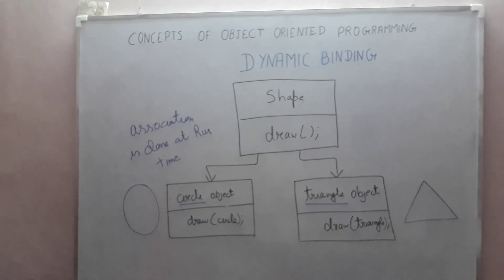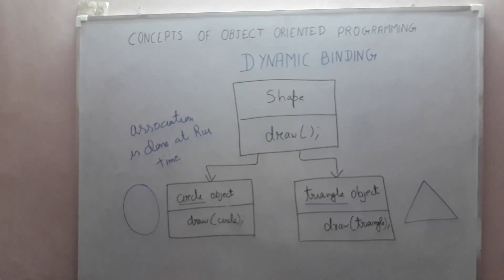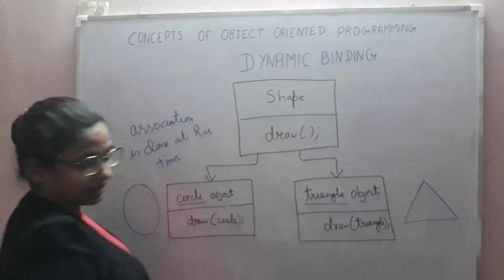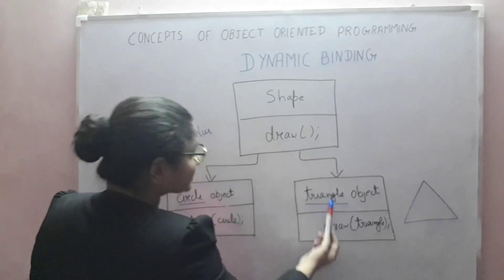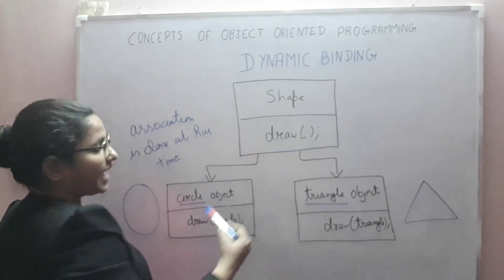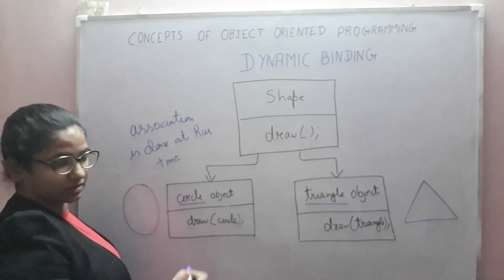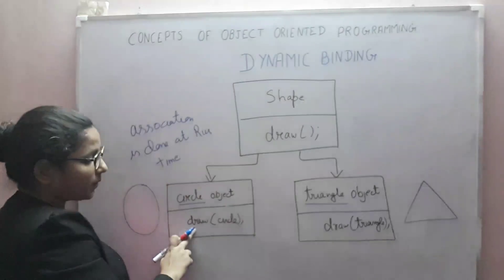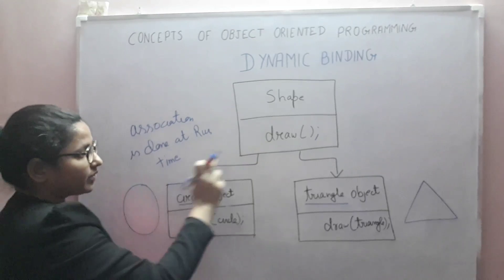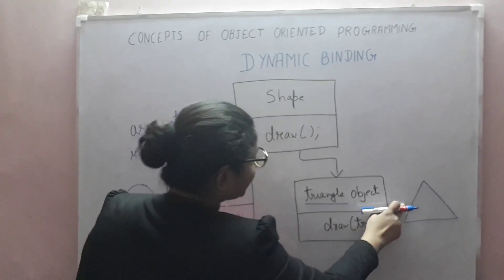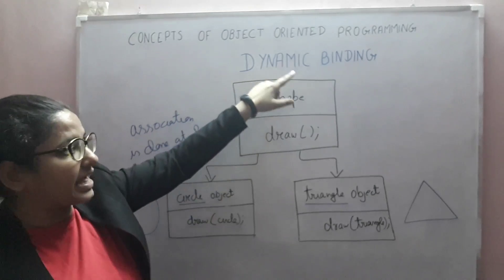Which code will be executed — whether it is circle class code or triangle class code — this association is done at runtime. Circle and triangle inherit the draw function from shape, but they have implemented their own draw method. So whenever you call draw with a circle object, you get a circle; with a triangle object, you get a triangle. This kind of binding is known as dynamic binding. Thank you.